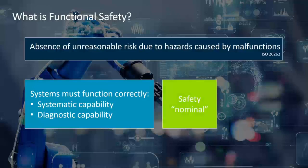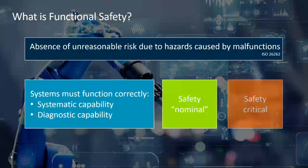Systems with a safety level of nominal are helpful rather than essential. Usually a user can act to avoid hazards if aware of a fault. Safety-critical systems are relied upon to always function. In case of failures, there is a high risk of hazard and loss of life.